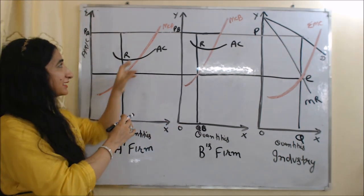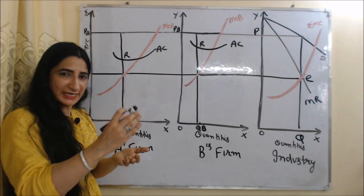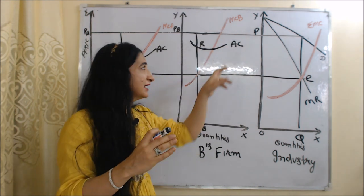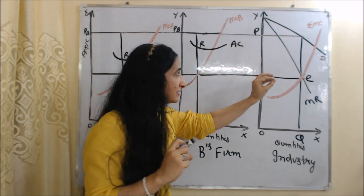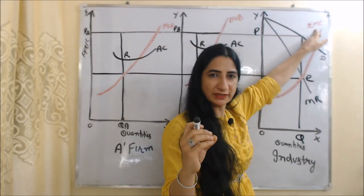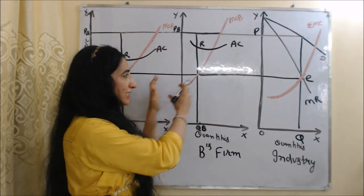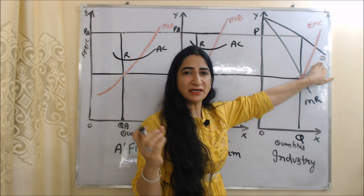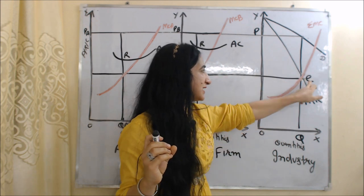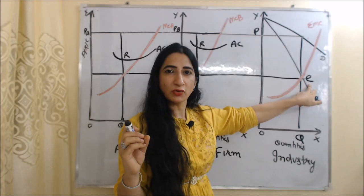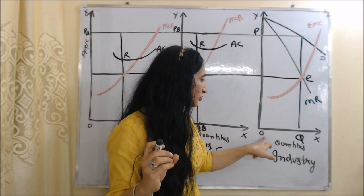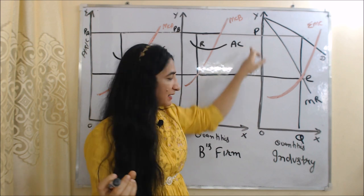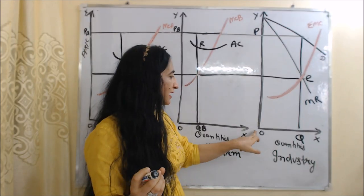In the first diagram, MC-A is the marginal cost of Firm A and AC is the average cost of Firm A. In the second diagram, MC-B is the marginal cost of Firm B and AC is the average cost of Firm B. In the third diagram, Sigma-MC is the marginal cost of the industry, which is the total of marginal cost of Firm A and marginal cost of Firm B. MR is the marginal revenue of the industry and D is the demand curve of the industry. The equilibrium of the industry is at point E, where marginal cost equals marginal revenue. The equilibrium output is O-Q and the equilibrium price is O-P.